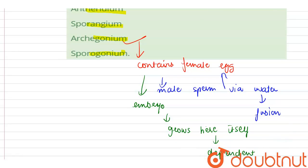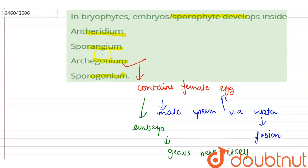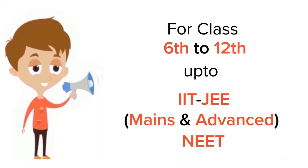The gametophyte is the dominant stage in the case of bryophytes. So the correct option is archegonium — in bryophytes, sporophyte develops inside the archegonium. Not in the infridium, which contains the male gametes, and not in sporangium or sporogonium. The correct option is archegonium.